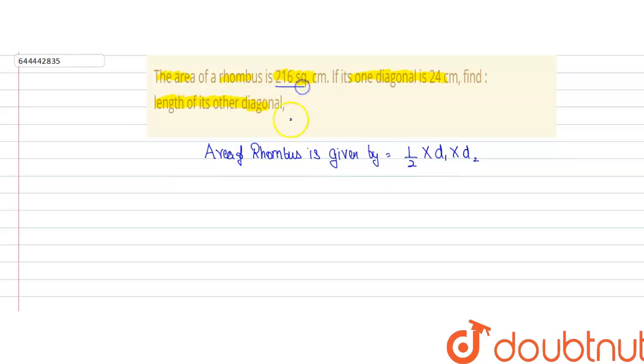The area of rhombus is 216 square centimeters. So we get 216 square centimeters equals 1/2 into the length of one diagonal, which is given to us as 24 centimeters.